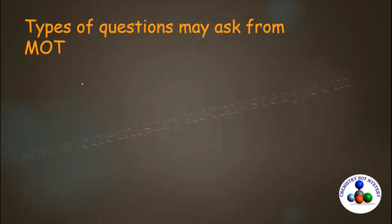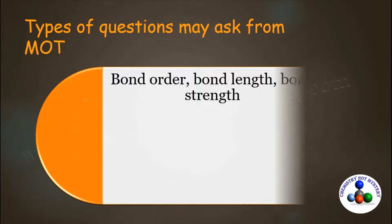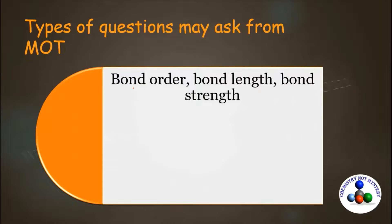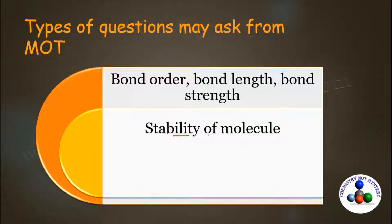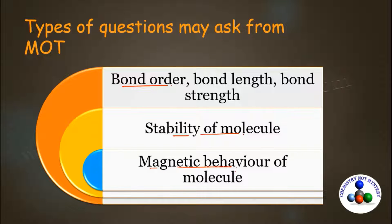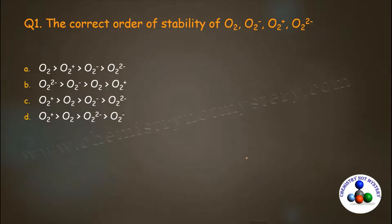The first type of question that can be asked from MOT is on bond order, bond strength, or bond length — they are all related to each other. The next variety of question can be asked on the stability of the molecule, which also depends on the bond order. The third type of question is on magnetic behavior. Let's try to solve the first question based on it.